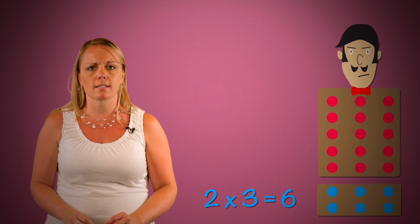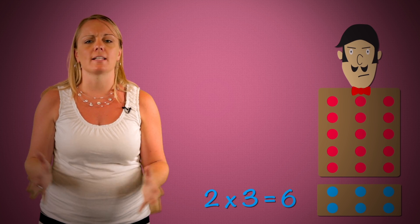What multiplication sentence describes this blue shaded part of the array? The blue section has two rows of three disks. So we write two times three equals six.